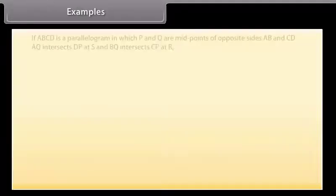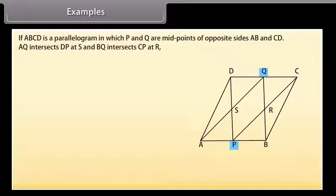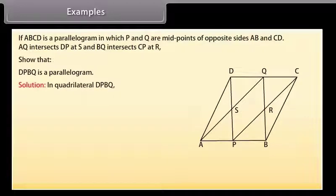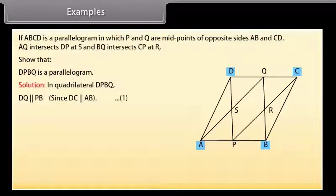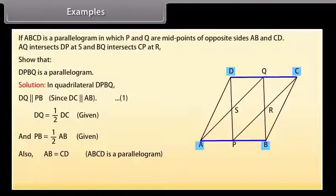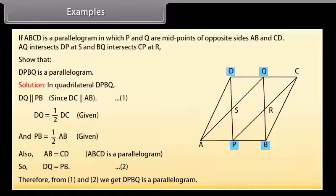Example: If ABCD is a parallelogram in which P and Q are midpoints of opposite sides AB and CD, AQ intersects DP at S and BQ intersects CP at R. Show that DPBQ is a parallelogram. Solution: In quadrilateral DPBQ, DQ is parallel to PB since DC is parallel to AB. DQ = ½DC and PB = ½AB. Also AB = CD since ABCD is a parallelogram. So DQ = PB. From these two conditions, DPBQ is a parallelogram.